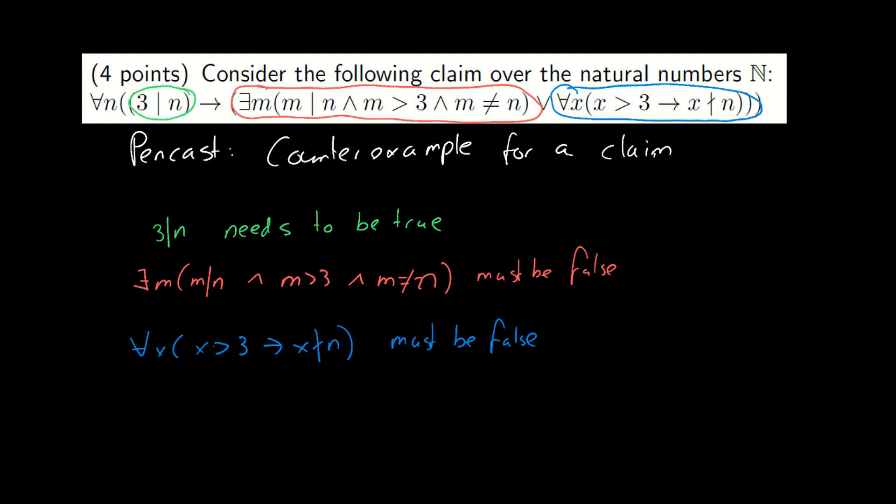So how does that work? Well, if 3 divides n must be true, let's see what options we've got. We can take 0 or 3 or 6 or 9, any multiple of 3.